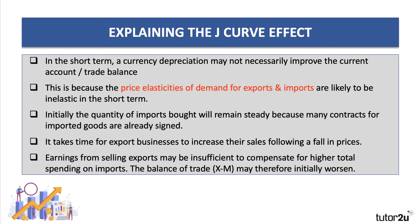So how do we explain the J-curve effect? In the short term, if the currency depreciates — if it falls in value, for example the pound may fall against the US dollar or the euro — what happens is that the price elasticity of demand for exports and imports tends to be quite low, in other words inelastic, in the short term. It takes time for export businesses to increase their sales. The quantity of imports we buy will probably remain fairly steady even if the price goes up, because many contracts for imported goods have already been signed. So import prices are going up and you're buying pretty much the same, meaning you'll spend more on imports. Export sales hopefully increase, but that takes time, so you're not getting a significant boost in the value of exports. The earnings from selling more exports may be insufficient to compensate for the higher total spend on imports.